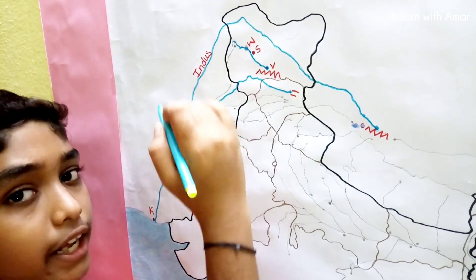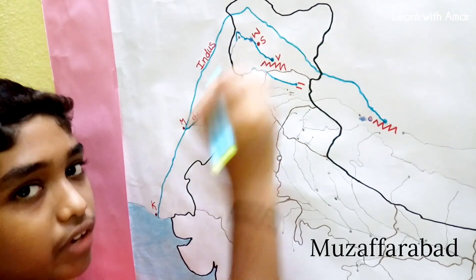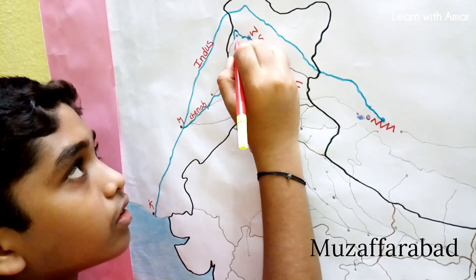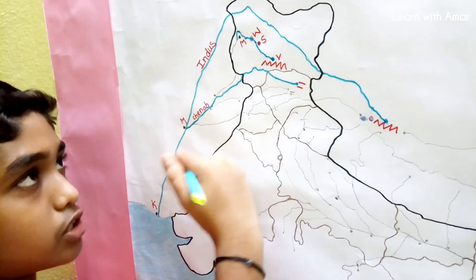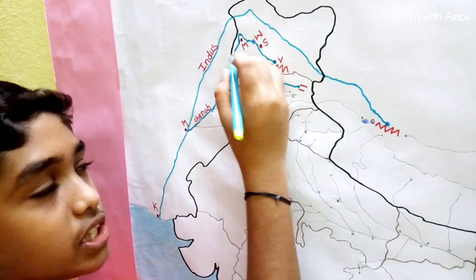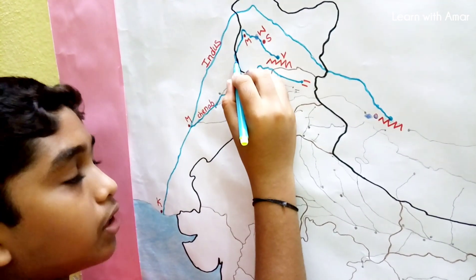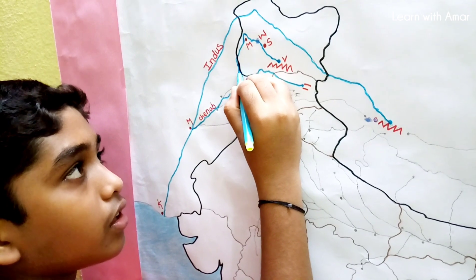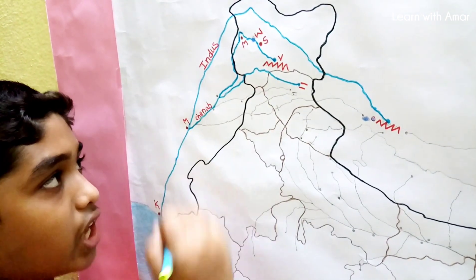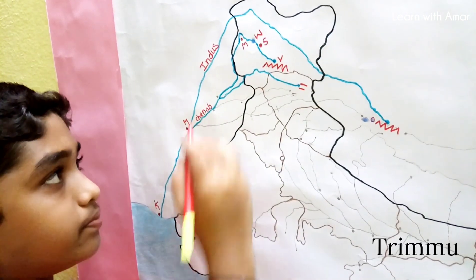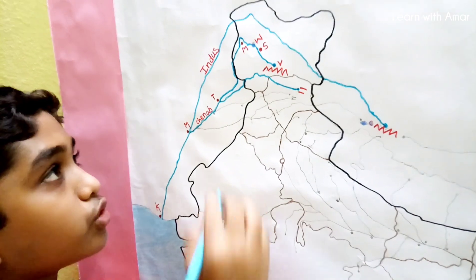The Jhelum takes a sharp hairpin bend at Muzaffarabad and turns south. For some time it acts as a border between India and Pakistan, then enters Pakistan. At last it joins with Chenab at Trimmu.